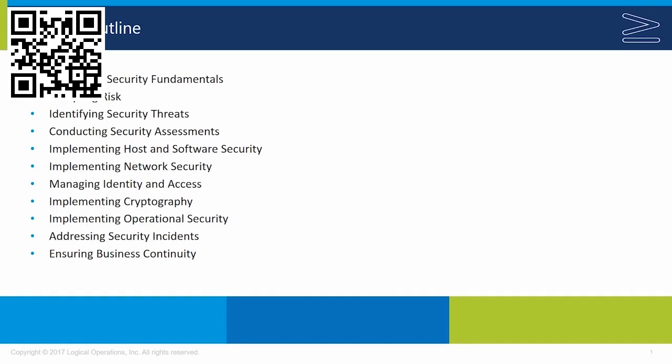Finally, we looked at addressing security incidents — understanding the steps needed to contain an incident and ensure it does not occur again. Business continuity is crucial because all the security in the world doesn't matter if the data is not available. I hope the information in this course was helpful, that it helps you prepare for and pass the certification exam, and that it gives you a better understanding of security in information technology. My name is Patrick Wilner — it's been my pleasure to be your instructor, and we'll see you next time.